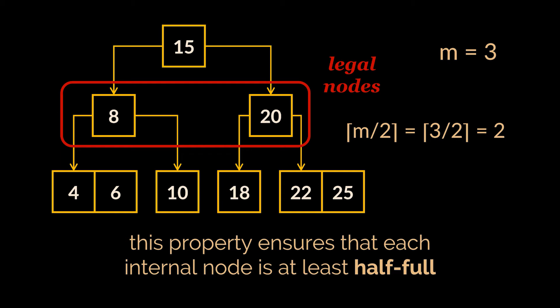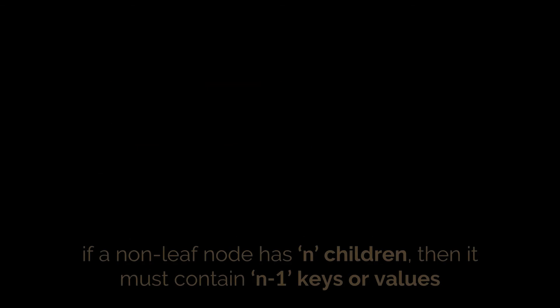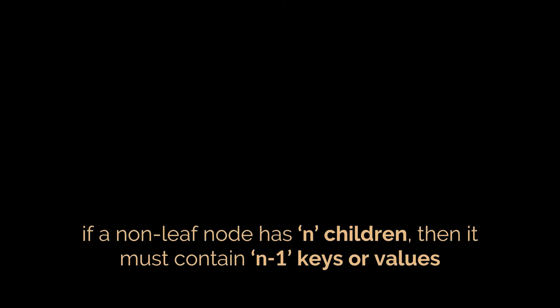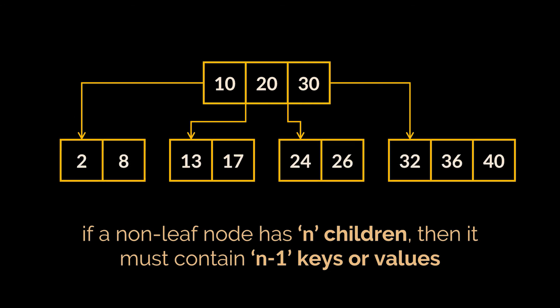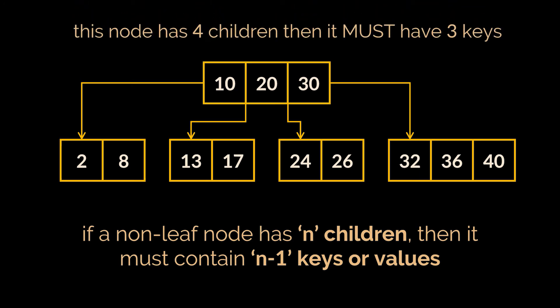The second property is more straightforward: if a non-leaf node has n children, then it must contain n minus one keys or values. For example, if the root node has four children nodes, it must contain three elements — 10, 20, and 30 — so we know which child stores which range of values. More generally, if we have n children then the parent must have n minus one keys stored inside it.